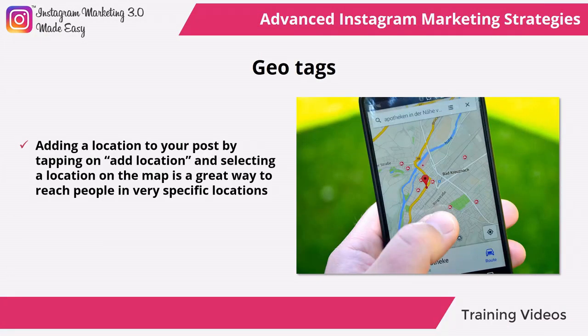Geo tags. Adding a location to your post by tapping on add location and selecting a location on the map is a great way to reach people in very specific locations. Geo tags will be shown on your post images and will be shown to people in that location and to people near that location as Instagram recommendations if those users use the search feature to find content. Apply these micro blogging strategies in your daily Instagram posts and see how your performance as well as your reach increases.